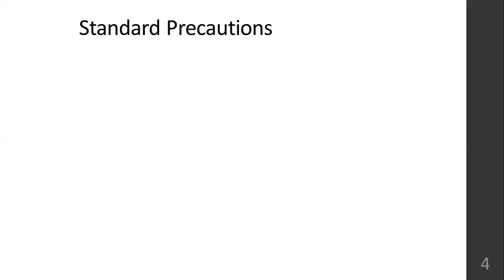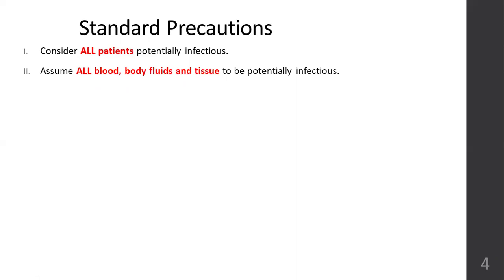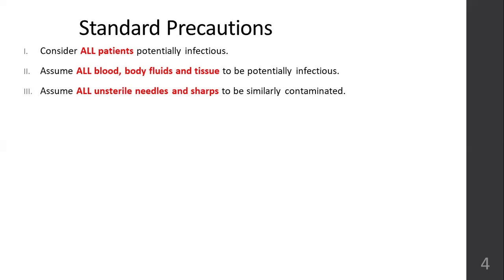Under standard precautions, all patients are considered harbors of infections and microorganisms. You have to consider all patients as potentially infectious. You must also assume all blood, body fluids, and substances from the patient are potentially infectious. Assume all blood, body fluid, and tissue are infectious, and all unsterile needles and sharps are similarly contaminated. Standard precautions aim to minimize and where possible eliminate the risk of transmission of infection, particularly those caused by blood-borne viruses.